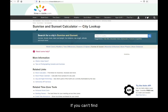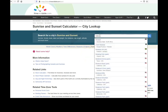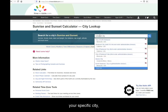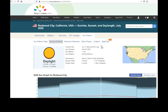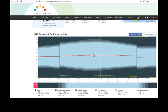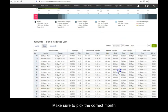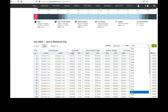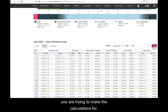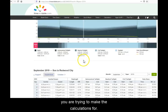If you can't find your specific city, pick one nearby, but try to be as exact as possible. Make sure to pick the correct month and year you are trying to make the calculations for.